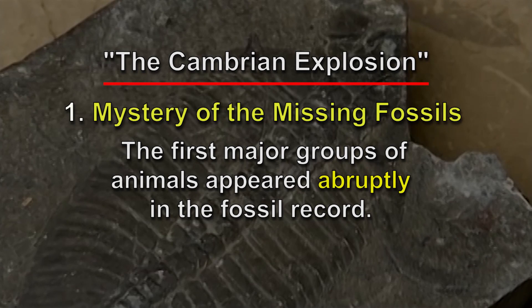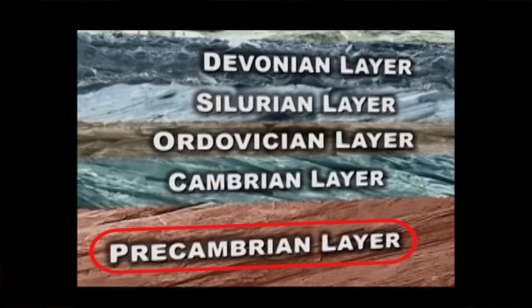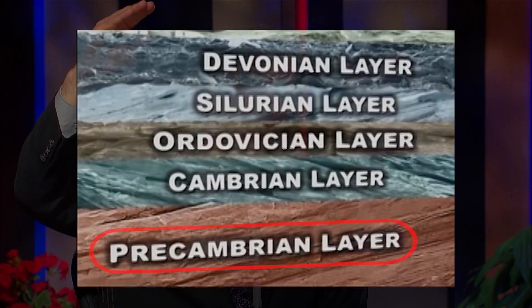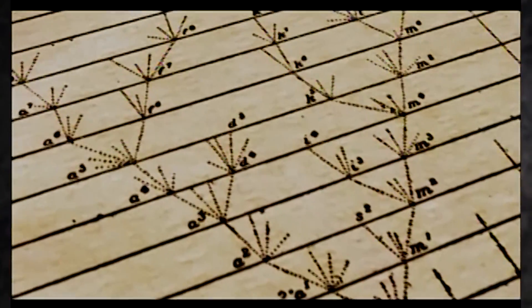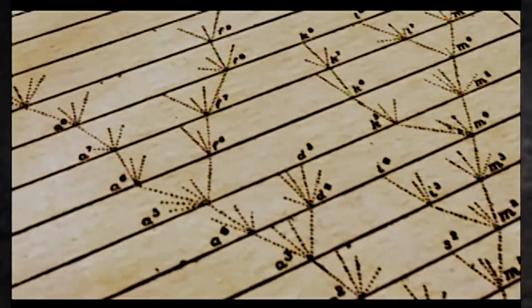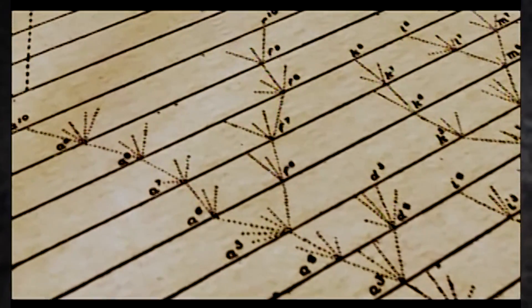As you go back into the lower pre-Cambrian strata, you don't find any evidence of the ancestral forms of those animals — the simpler forms that you would expect to find according to Darwin's theory, because Darwin expected that the first complex forms of life would have emerged very gradually as a result of the accumulation of numerous slight variations or changes generation to generation. You just don't see the accumulation of those changes in the lower strata.